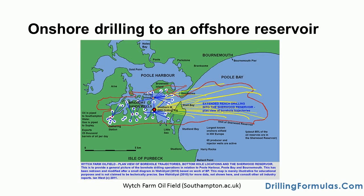Onshore drilling to an offshore reservoir. It is more economically viable to reach an offshore target from onshore, rather than build an offshore platform. The Wytch Farm oil field, located on the south coast of England, is one such example, and is in fact the largest onshore oil field in Western Europe, even though the reservoir is located offshore. This area is environmentally sensitive, so operations were made economically possible by drilling from the land under the sea. Extended reach wells, which extend horizontally over twice their depth, allowed for this.